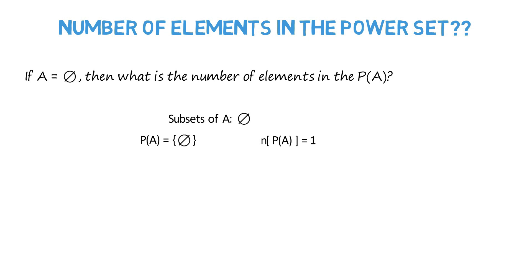Therefore, the power set of A has only one element. Also, we know that the number of elements in the power set of A is equal to 2 raised to the power number of elements in the set A.